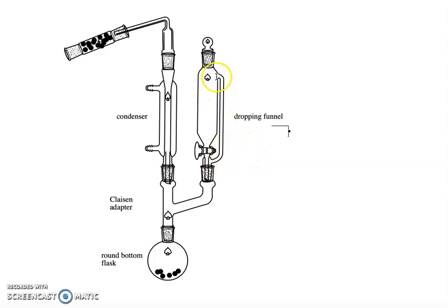The dropping funnel is called an addition funnel. This tube right here is a pressure equalizing feature. It allows the pressure to be maintained and the dropping to happen at an even rate.